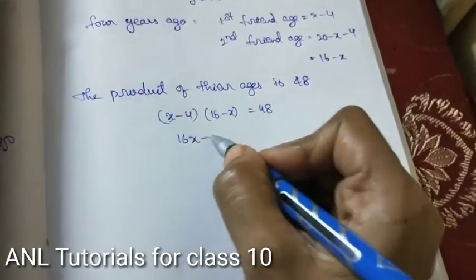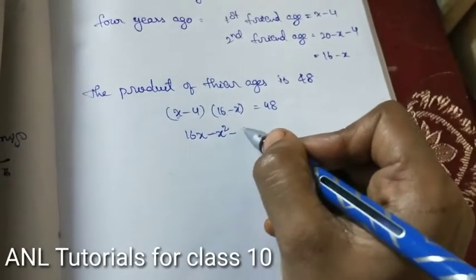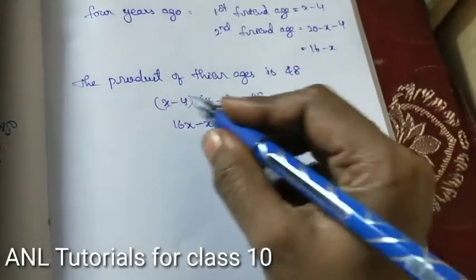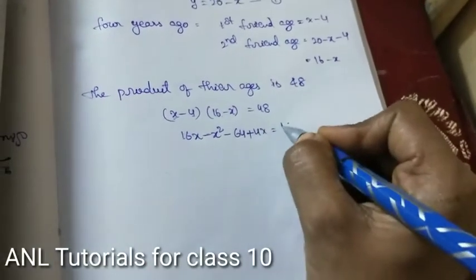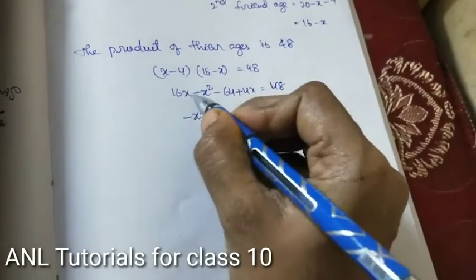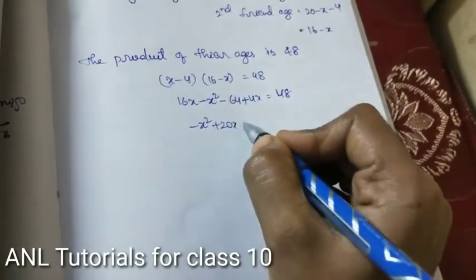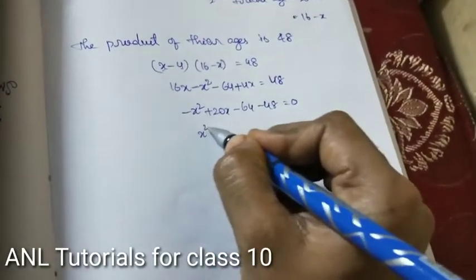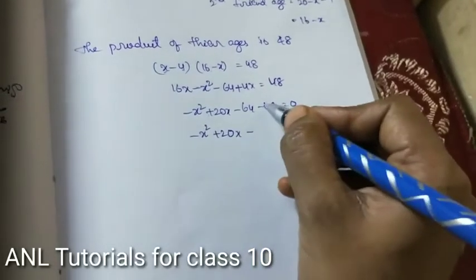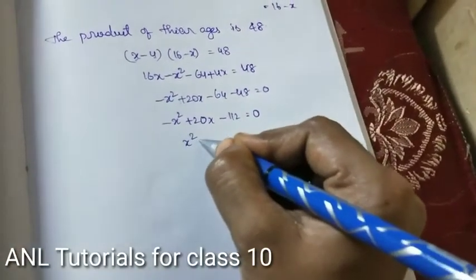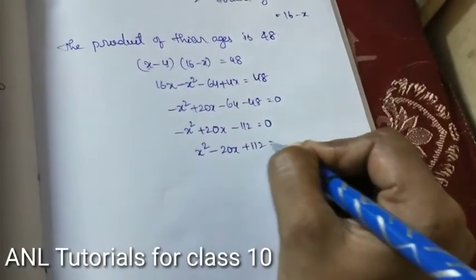Continuing the expansion: 4 into 16 is minus 64, and 4 into x gives plus 4x, equals 48. Simplifying gives minus x squared plus 20x minus 112 equals 0, or x squared minus 20x plus 112 equals 0.